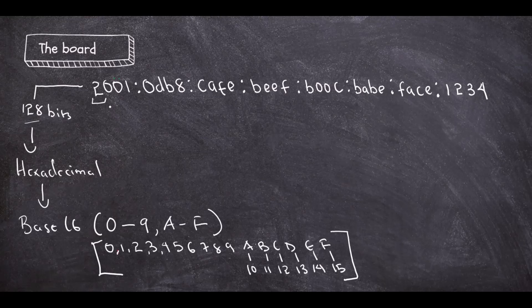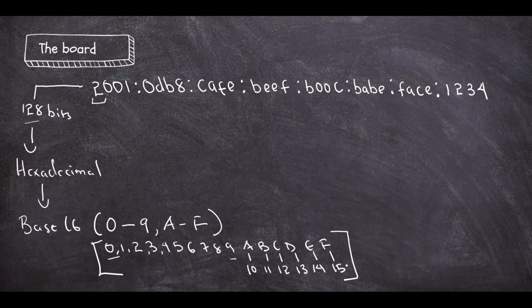Since each position is 4 bits, we can have up to 16 values. So we go 0, 1, 2, 3 up to 9, and then in place of 10 we have A, 11 is B, 12 is C, D is 13, E is 14, F is 15. Take note of this table as it's important in how we can quickly subnet an IPv6 prefix.